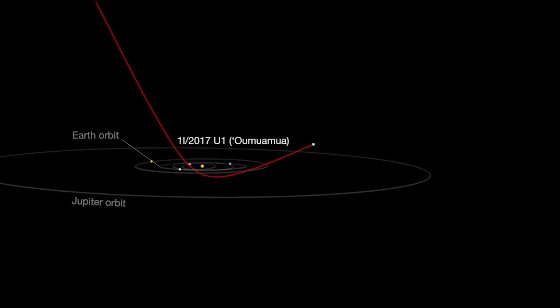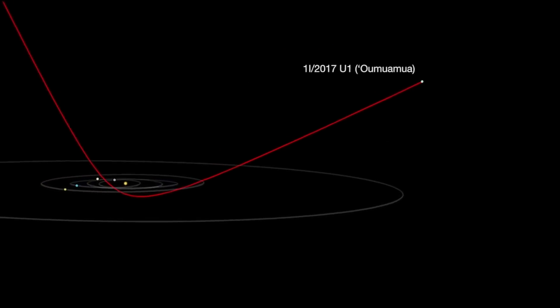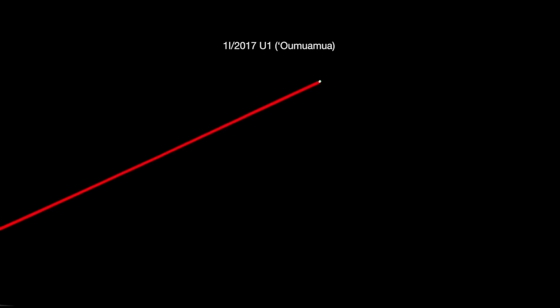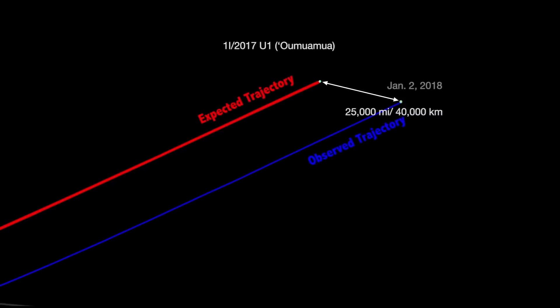But as we watched it over the course of two or three months, it wasn't following that trajectory perfectly. It was fairly close, but it was off by about 40,000 kilometers, which is a small distance in space, but is enough to explain some strange motion.